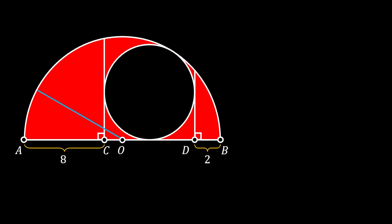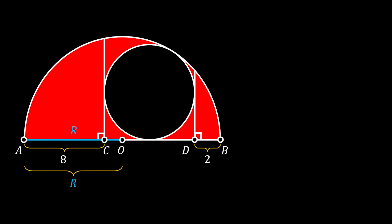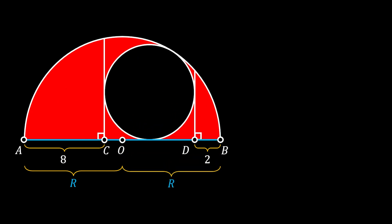Now let's draw the blue line representing the radius of our half circle and label it as R. If we rotate it, we can see that line OA must also have the value of R, and rotating it to the other side, line OB will also have the value of R.